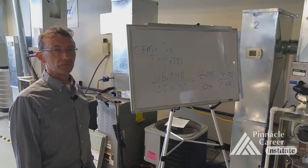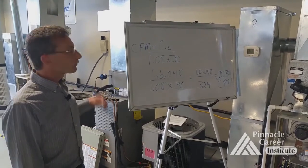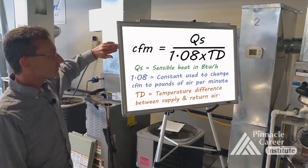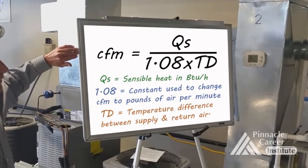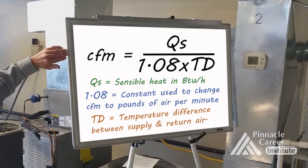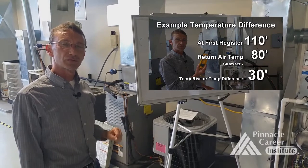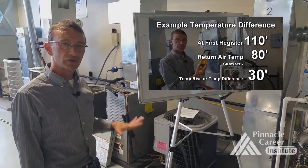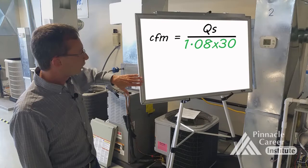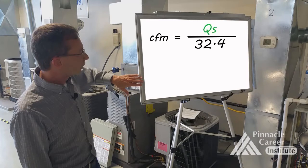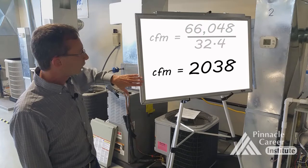Now that we have all of our information, we're going to do this calculation. CFM is cubic feet per minute. QS is the quantity in sensible BTUs, and 1.08 is a fixed number that never changes, times temperature difference. The temperature difference was simply the difference between the supply air and the return air temperature. 1.08 times 30 gives us 32.4. We will divide that by the output in BTUs, which is 66,048. After we do the math, we have 2,038 cubic feet of air per minute moving through that furnace.